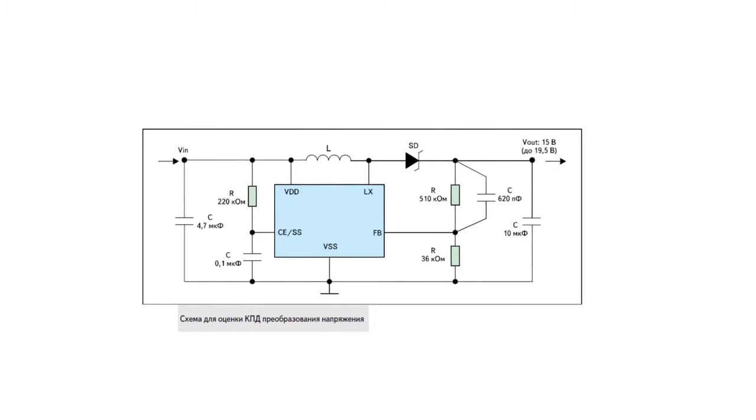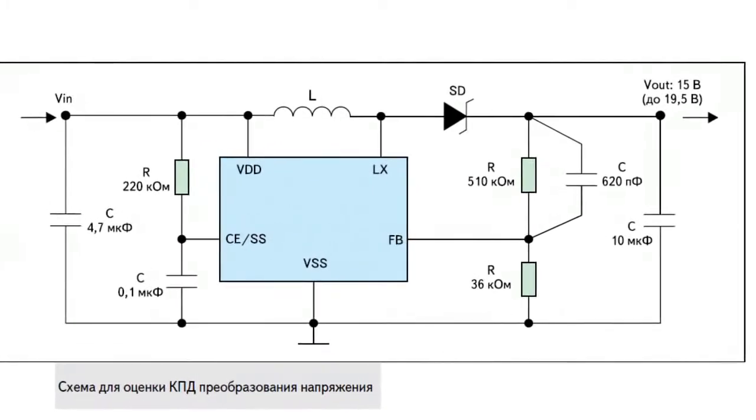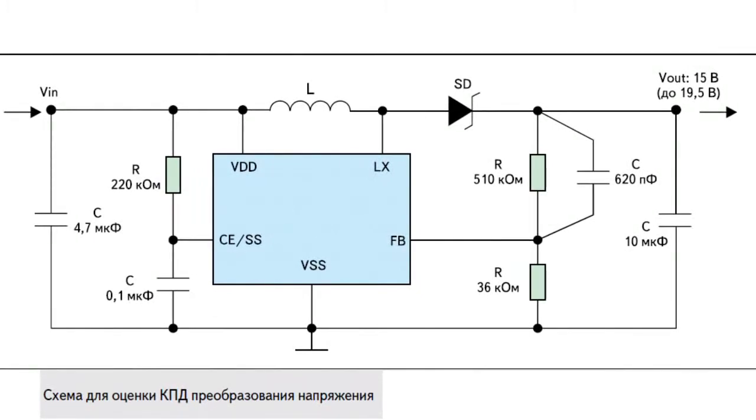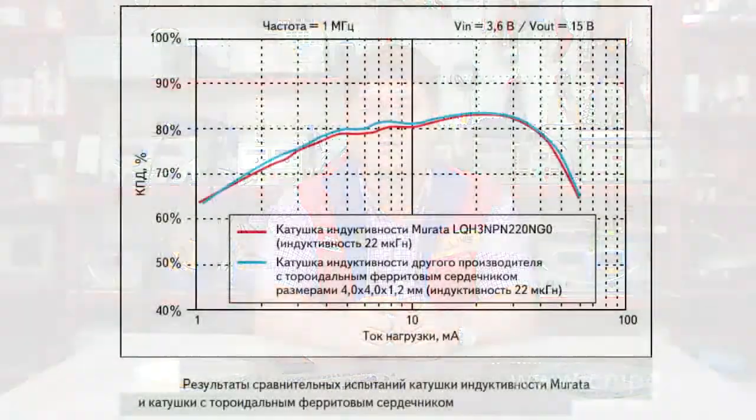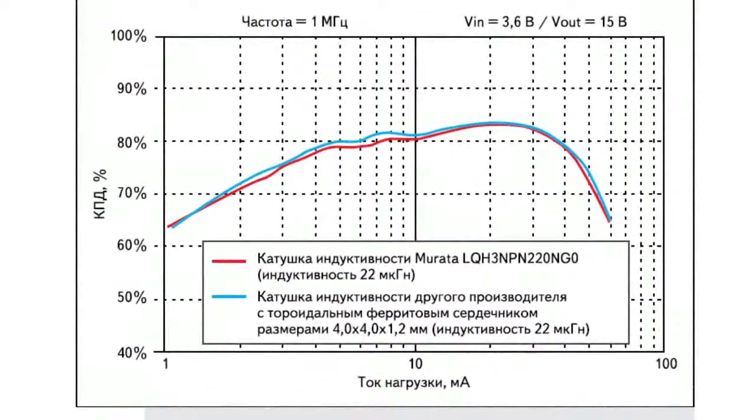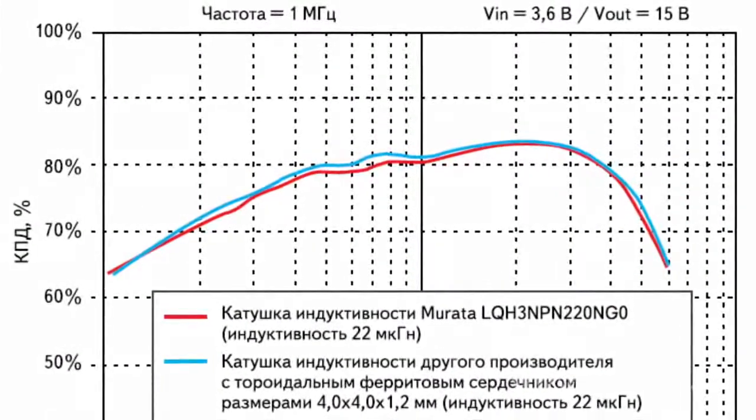For instance, let us look at the efficiency diagram of a DC-DC converter equipped with an inductor from the Murata LQH3NPN220N range, with inductance of 22µH and dimensions of 3x3 mm. To evaluate Murata's product, a step-up DC-DC converter with a switching frequency of 1 MHz was used. For comparison, Murata specialists measured the parameters of the circuit using an inductor produced by another company with a toroidal ferrite core of size 4x4x1.2 mm. The test showed that the volume of the LQH inductor series is less than half the volume of the throttle with the toroidal core.